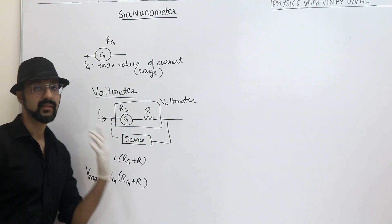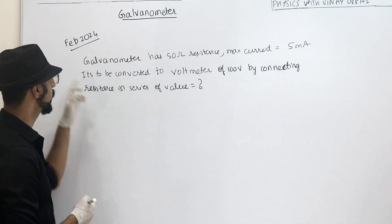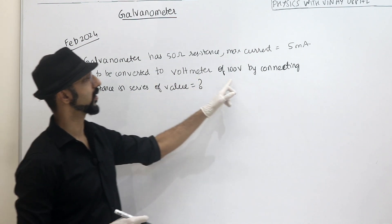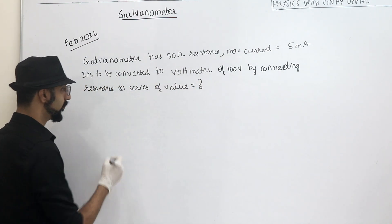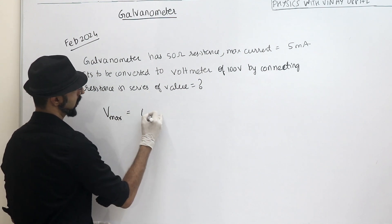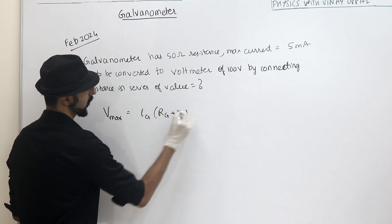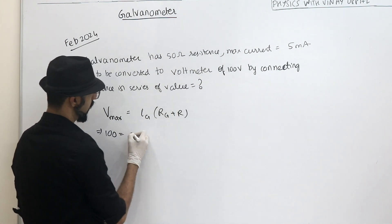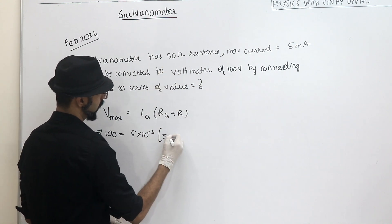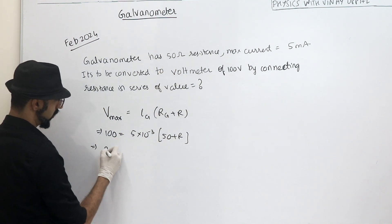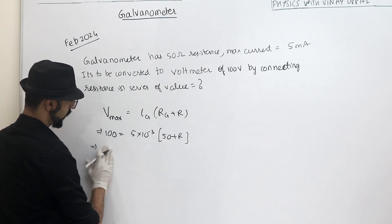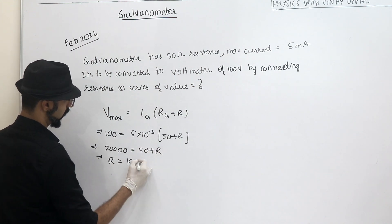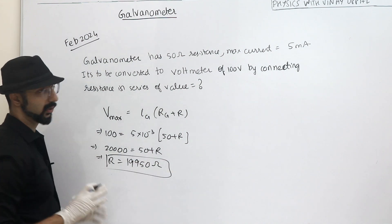Let's look at a question from February 2024. The Galvanometer has 50 ohm resistance and the maximum current through it is 5 milliampere. It is to be converted to a voltmeter of 100 volts by connecting a resistance in series. Simple: maximum voltage = maximum current × (RG + R). So 100 = 5×10⁻³ × (50 + R). This gives 50 + R = 20,000, so R = 19,950 ohms. That's the answer — very simple formula-based.